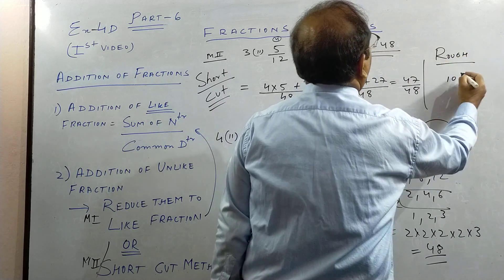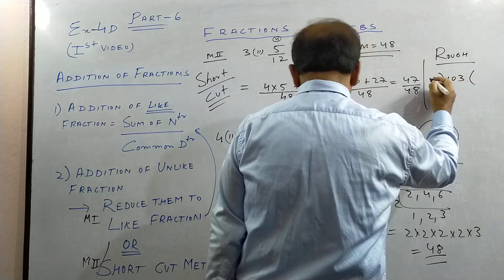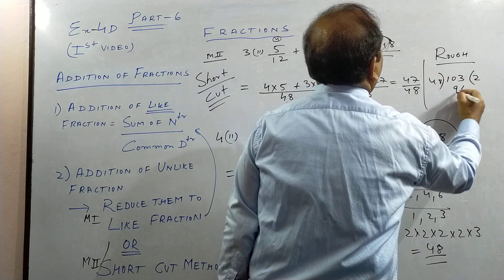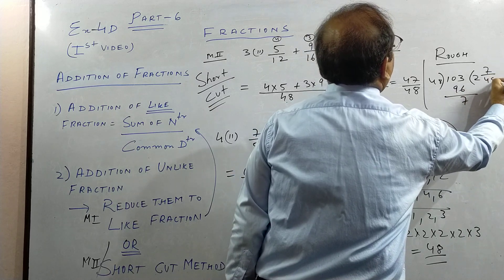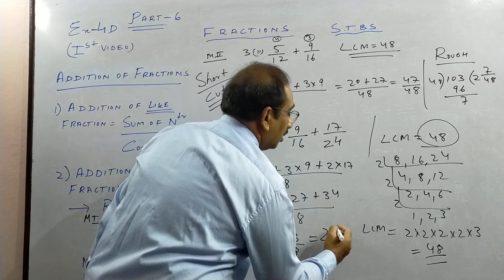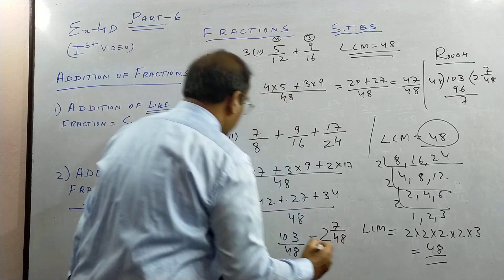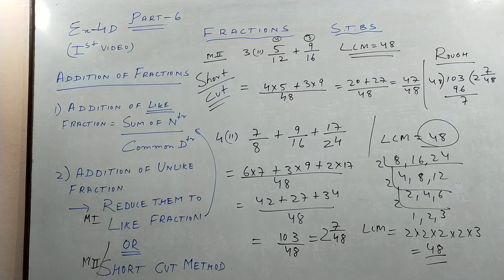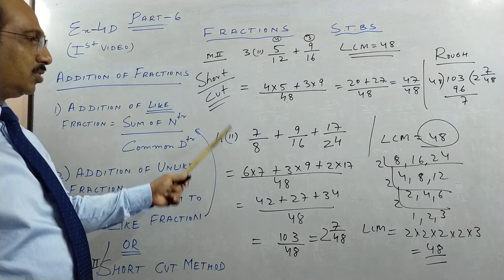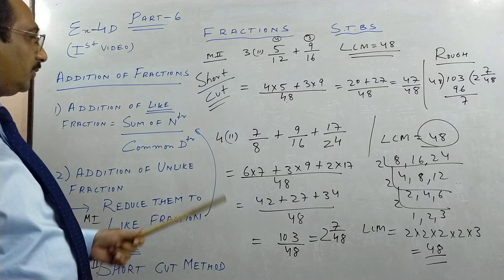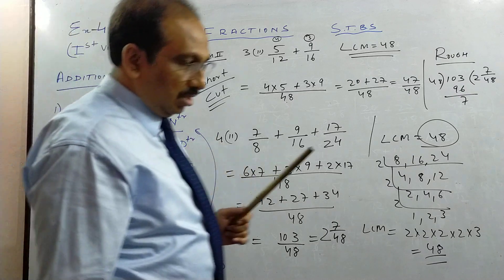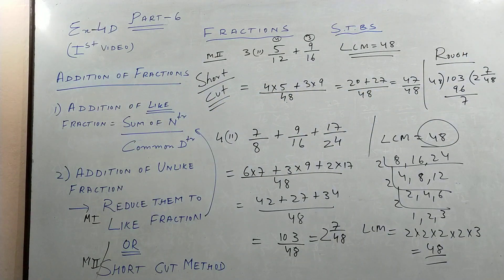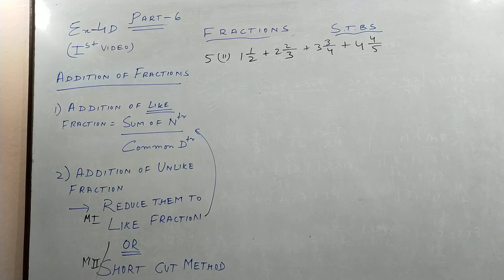So in your rough work, what we do? We try to change 103 by 48 improper fraction into mixed fraction. So what I get children is 2, 7 by 48. You can do this and check. So this is how we do sum of fractions, unlike fractions. In the last sum, I will do 5 part 2. Please pause the video and copy.